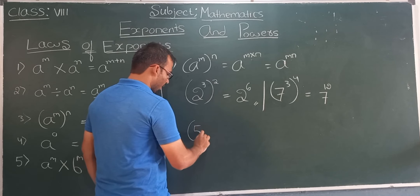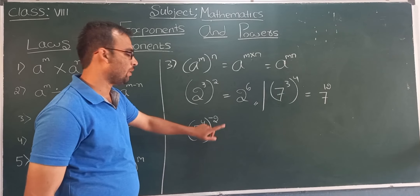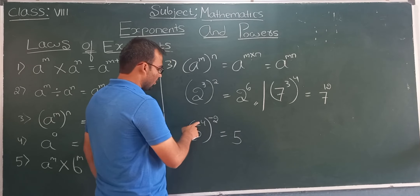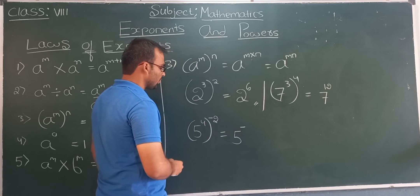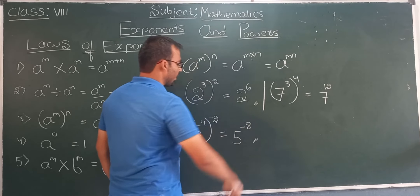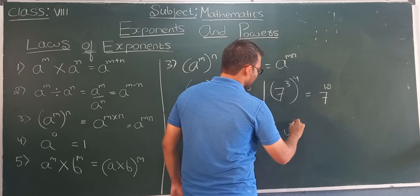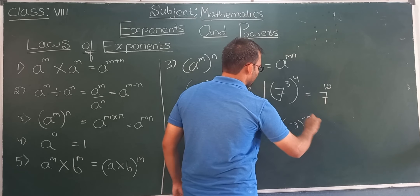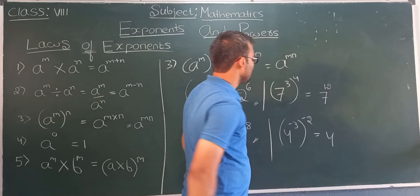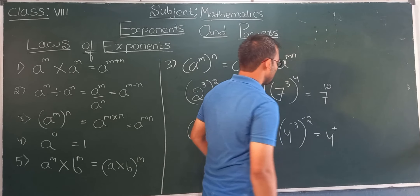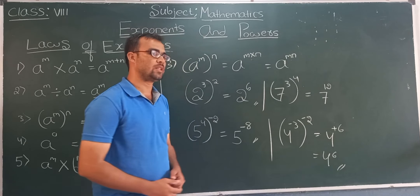Next example: 5 to the power 4, whole to the power minus 2. Here plus into minus gives minus, so the answer is 5 to the power minus 8. One more: 4 to the power minus 3, whole to the power minus 2. Minus into minus gives plus, so the answer is 4 to the power 6. This is all about the third law of exponents.